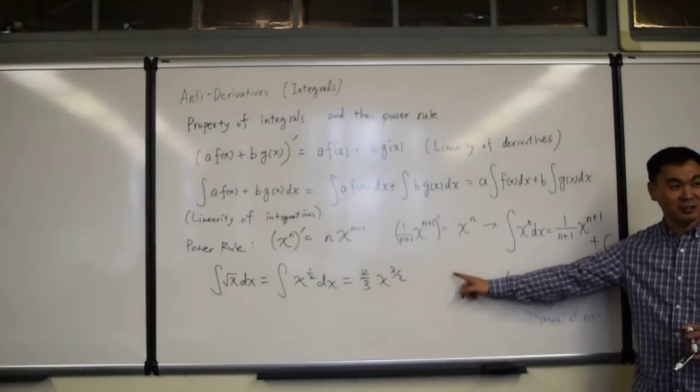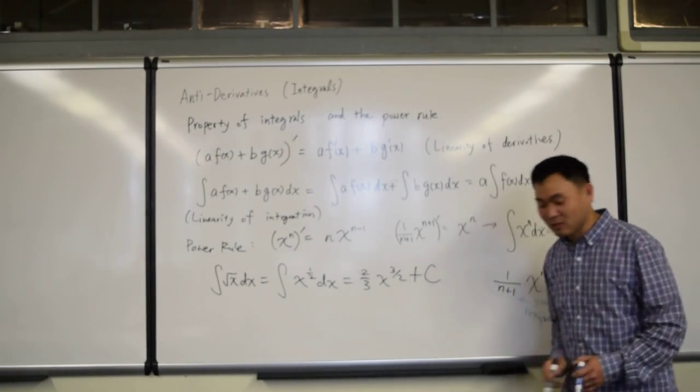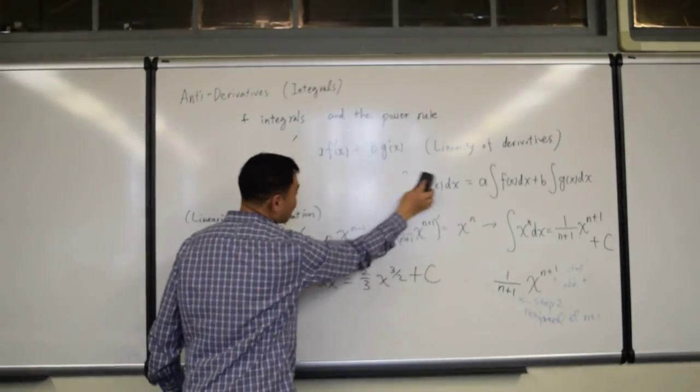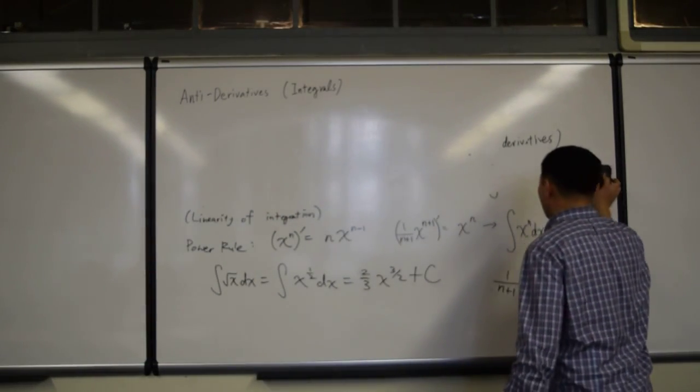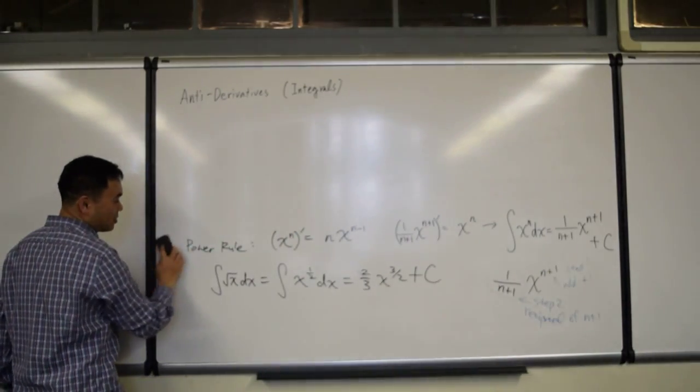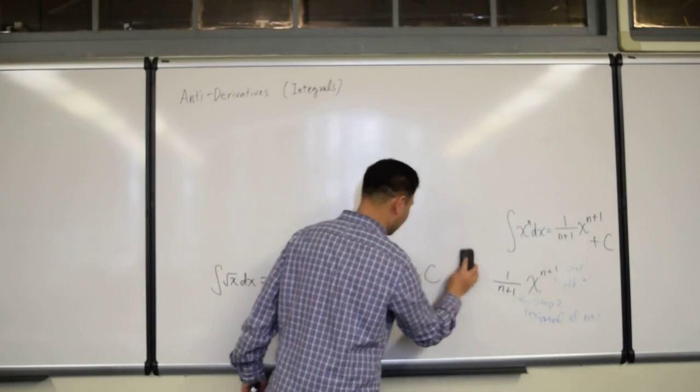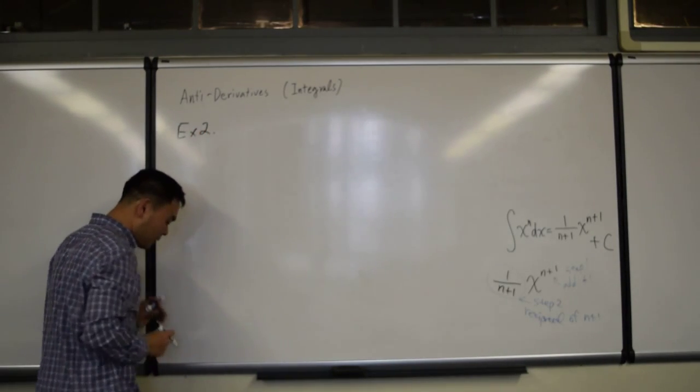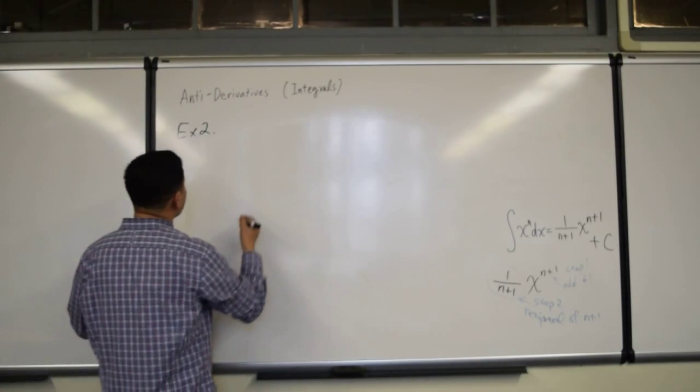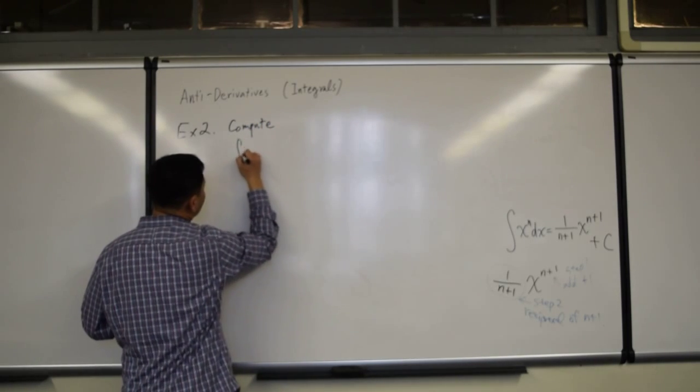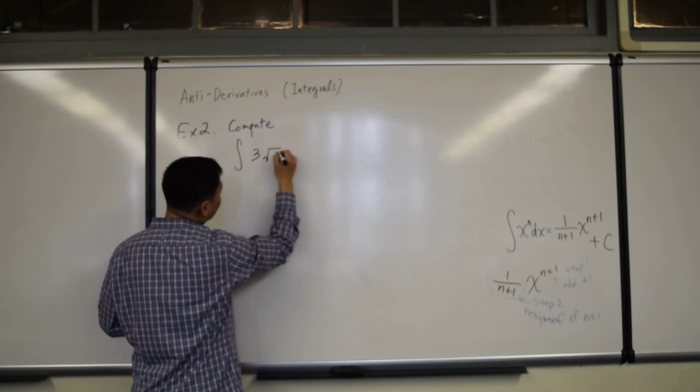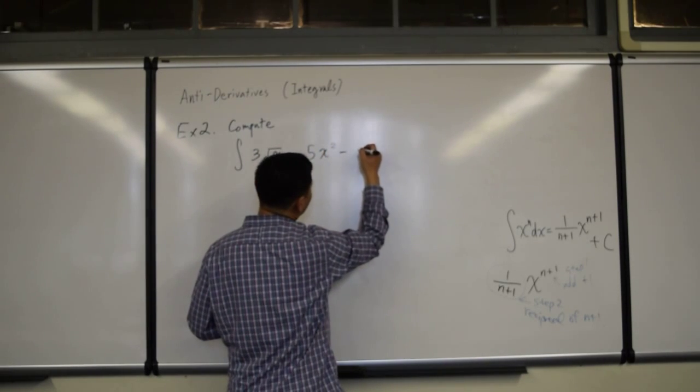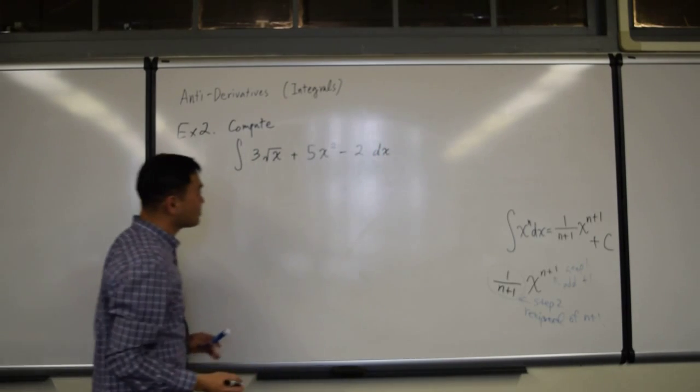What did I do? I forgot plus c. Plus c, always. Try to remind me. All right, so using this, let's try a problem. After one problem, you probably need to understand what this business is about. So, with a power rule and a linearity, that's a pillar question. For example, compute integral of three square root of x plus five x squared minus two dx. Let's try this.